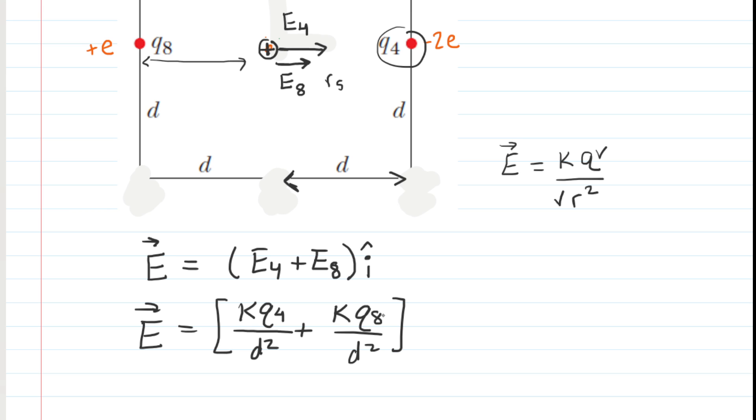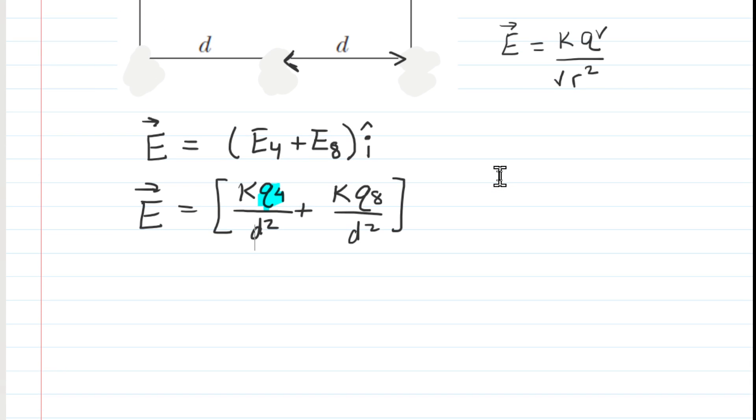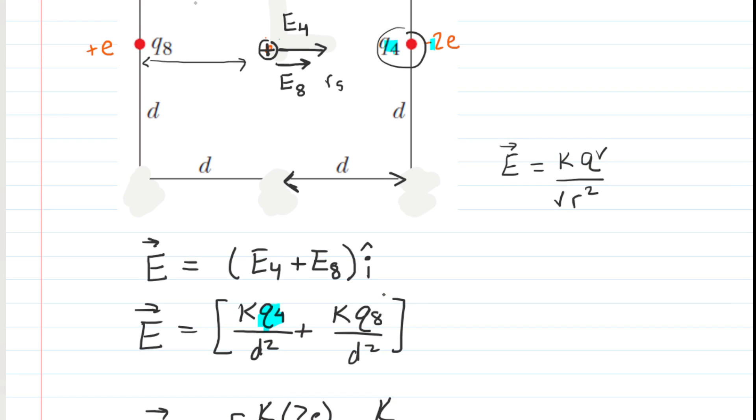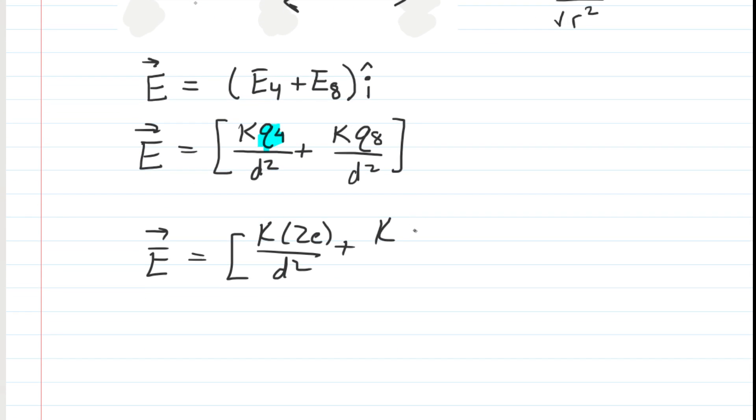Notice for Q8, we are, excuse me, for Q4, Q4 is the one that is negative. Notice that when we plug in for Q4, we're not going to plug in negative 2E, we're only plugging in the magnitude. So we're only plugging in as 2E. So you would have K multiplied by 2E over D squared plus K. And then Q8 had a magnitude of charge of just positive 1E. Again, we're just doing the magnitude. So you can just fill that in as 1E. And that was over D squared. This is all in the I hat or X direction.